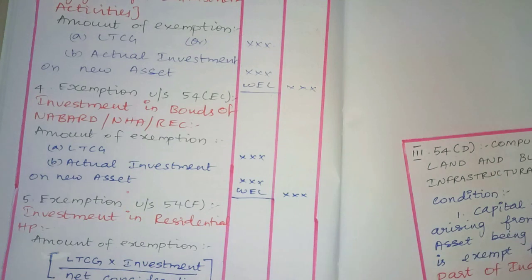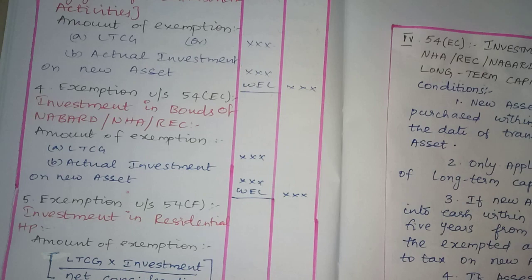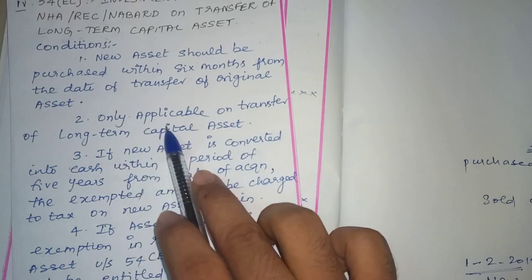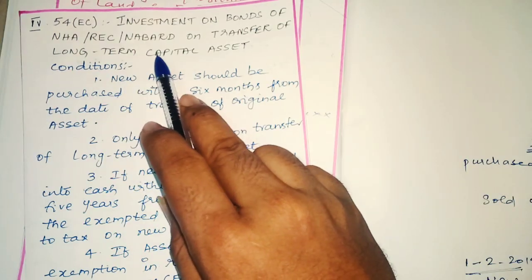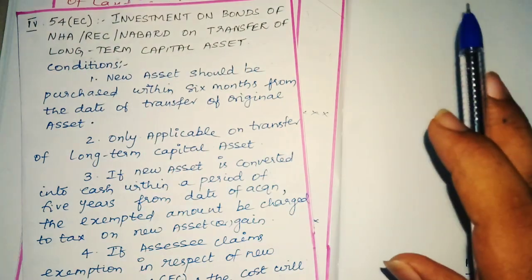Next, Exemption Under Section 54EC. This exemption applies to investments made in bonds of NHAI (National Highway Authority), REC (Rural Electrification Corporation), NABAT, and other notified bonds. If you invest in these bonds, you can claim an exemption. This exemption applies only to the transfer of long term capital assets — it will not apply for short term capital gains.